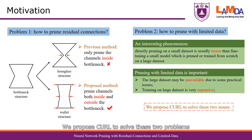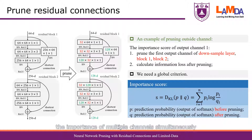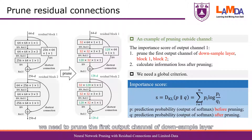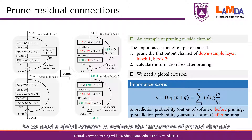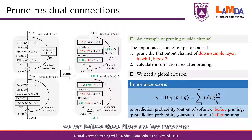We propose CURVE to solve these two problems. In order to solve the first problem, we propose a global criterion to evaluate the importance of multiple channels simultaneously. Let's focus on the output dimension, namely the green numbers in the left figure. We should prune these channels simultaneously. For example, if we want to calculate the importance score of the first dimension, we need to prune the first output channel of the same layer, block 1 and block 2, simultaneously. So we need a global criterion to evaluate the importance of pruned channels. We focus on the network output: if there is no obvious change in the output probability after removing some filters, we can believe these filters are less important. So we propose a KL divergence-based criterion as the importance score.